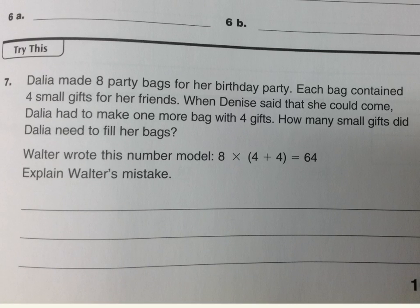Now this last part is your best chance to be a thinker because you have to read this story and figure out what's going on and use what you've just learned to explain it. So let's just read it together quickly and underline some important things. So Dalia made 8 party bags for her birthday party. Each bag contained 4 small gifts for her friends. When Denise said that she could come, Dalia had to make one more bag with 4 gifts. How many small gifts did Dalia need to fill her bags?